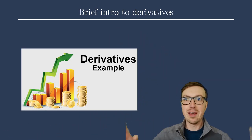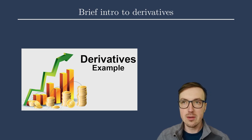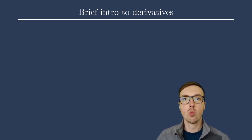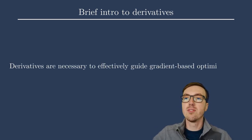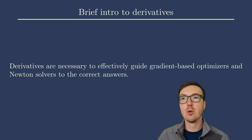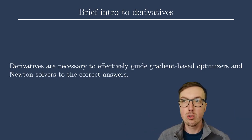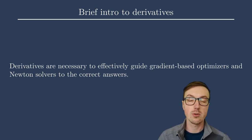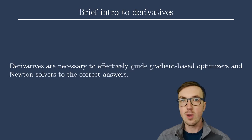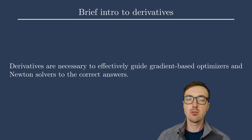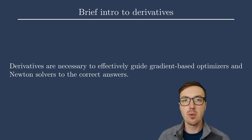So I'm not talking about financial derivatives. I don't know anything about that. I'm not talking about a derivative work of art. Let's talk about derivatives in this sense, in the optimization sense. So derivatives are necessary to effectively guide gradient-based optimizers and Newton solvers to the correct answers. Now, you could do optimization without derivatives, but it's generally not efficient. Another lecture is going into more detail about that. Today, we're just talking about what derivatives are and what they mean for you to do optimization.